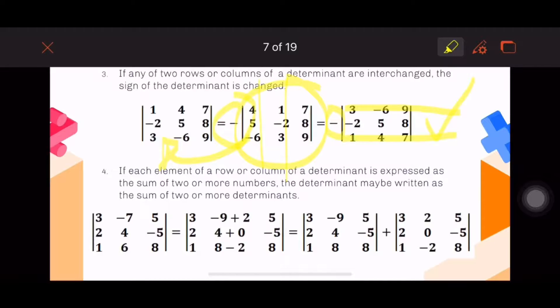Number four: if each element of a row or column of a determinant is expressed as the sum of two or more numbers, the determinant may be written as the sum of two or more determinants. Let's interpret this by starting from the right. As you can see, you have two determinants here - determinant one and determinant two have identical first and third columns.